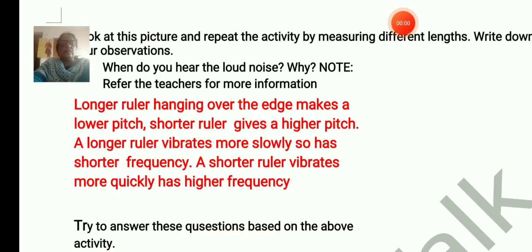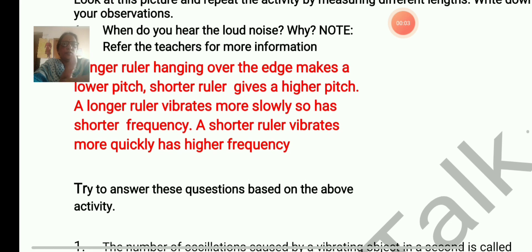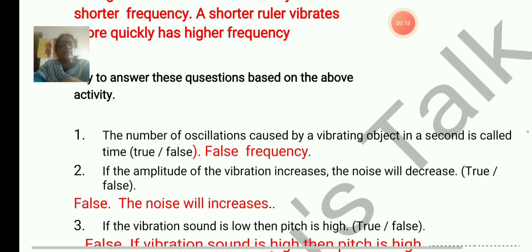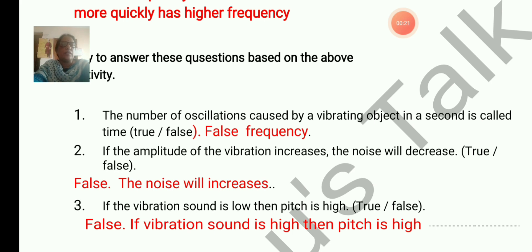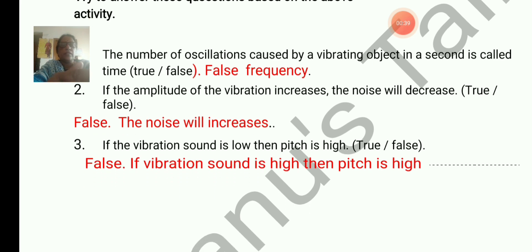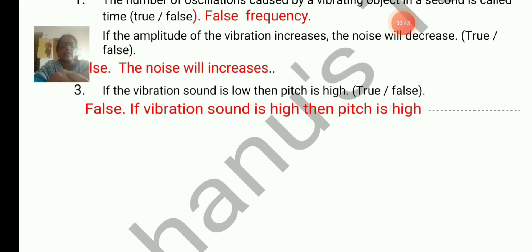Try to answer these questions based on the above activity. True or false: the number of oscillations caused by a vibrating object in a second is called time — this is false; it is actually called frequency. If the amplitude of vibration increases, the noise will decrease — false; the noise will increase. If the vibration frequency is low, then pitch is high — also false; if frequency is high, then pitch is also high. You can write true or false, or give the reason as well.